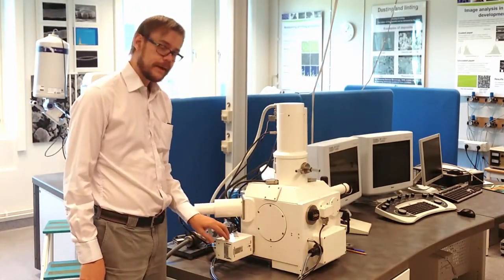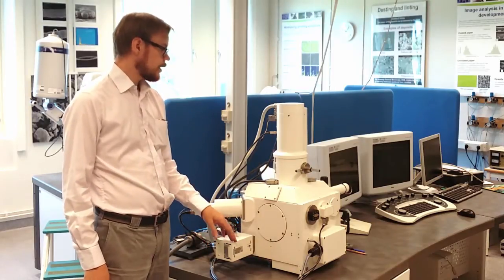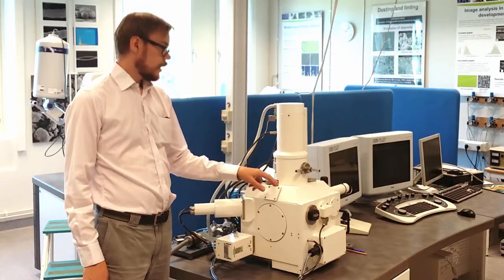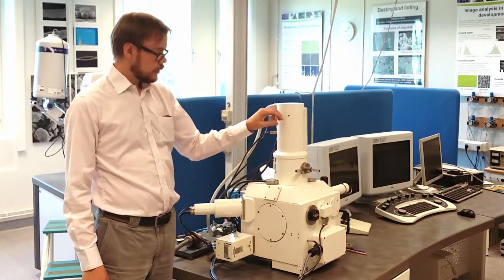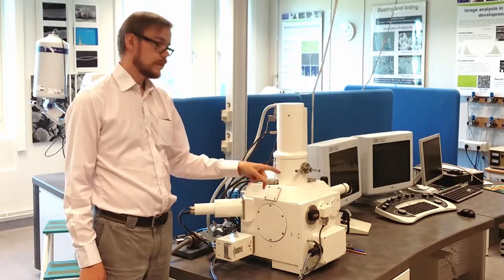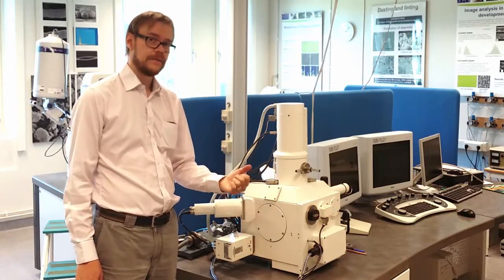On this side you have the backscattering detector. This is the control unit for it. But actually the detector is located here inside just beneath the gun. And it works like that when the electron gun here shoots electrons off the sample. Some of those are reflected back upwards again and can be picked up by this detector. And create what is called the backscattering image.